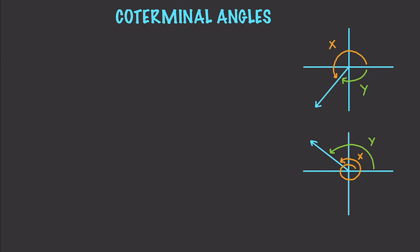This brings us to the concept of coterminal angles. These are angles whose terminal sides are the same ray. The initial side is where the angle begins, and the terminal side is where it ends. Both coterminal angles terminate at the same ray.